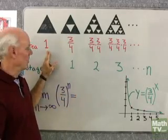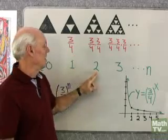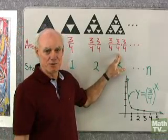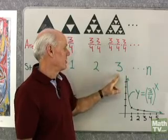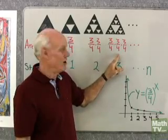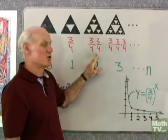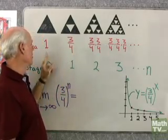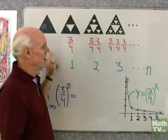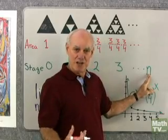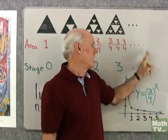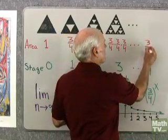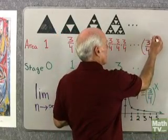Stage 0, the area is 1. Stage 1, the area is 3/4ths. Stage 2, 3/4ths times 3/4ths. Stage 3, 3/4ths times 3/4ths times 3/4ths. So I think you can see at stage 3 it's 3/4ths to the third. At stage 2, 3/4ths to the second. Stage 1, 3/4ths to the one. And at stage 0, 3/4ths to the zero. So if I was to go out to the nth stage of the Sierpinski triangle, I could write a formula here for its area. And that would be 3/4ths to the nth power.